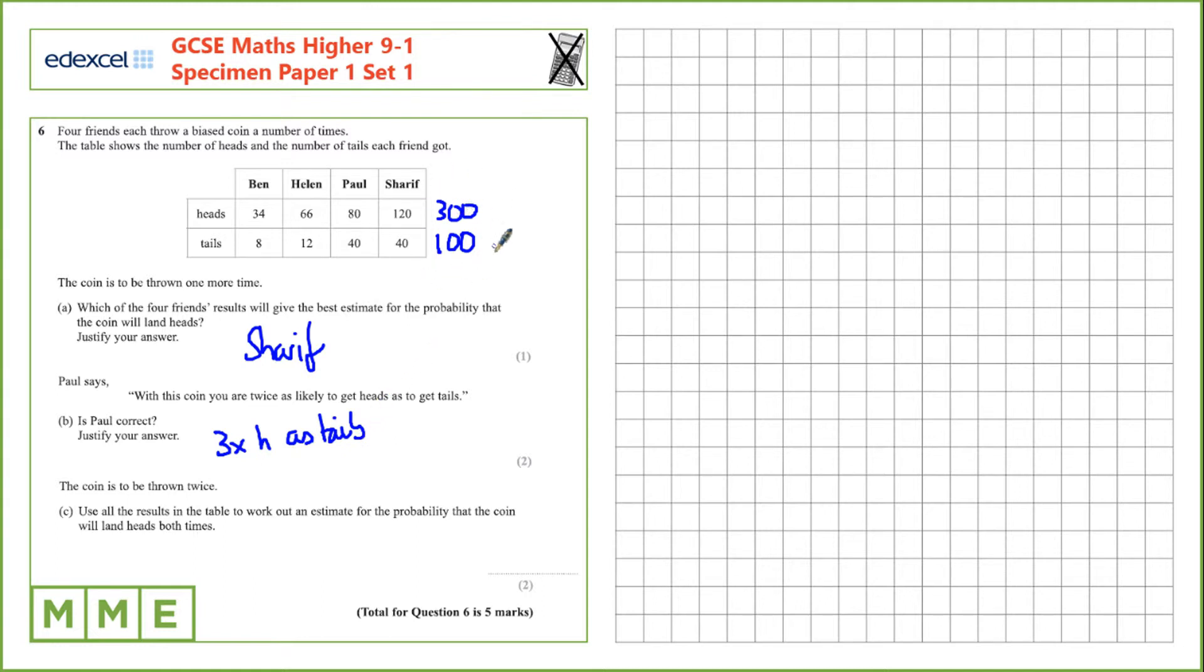We can calculate the probability from here. So 300 times it landed on heads out of a total of 400. So the probability is 300 over 400, or if we cancel that down, 3 over 4. That's the probability of one heads. We want the probability of getting heads then heads, which is 3 over 4 multiplied by 3 over 4, which is 9 over 16.